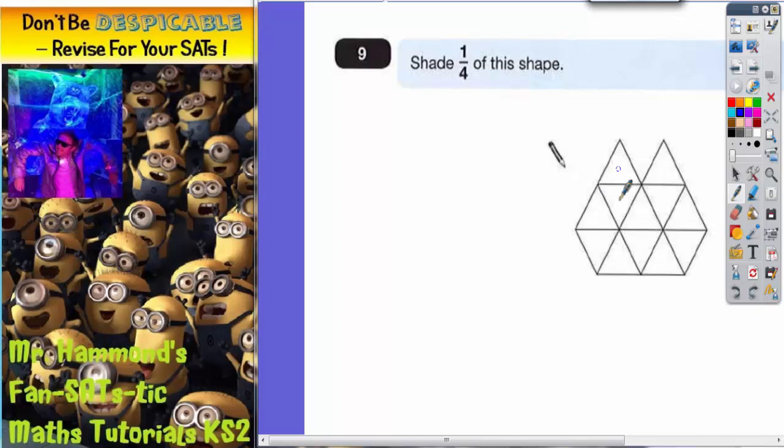So we've got 1, 2, 3, 4, 5, 6, 7, 8, 9, 10, 11, 12 small triangles making up the shape. So if there's 12 triangles, we actually need to find a quarter of 12.